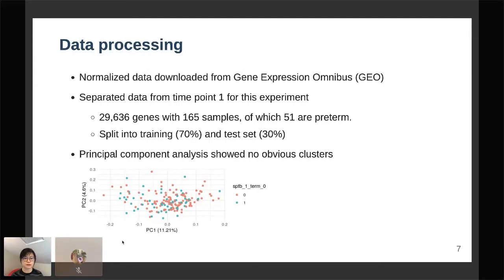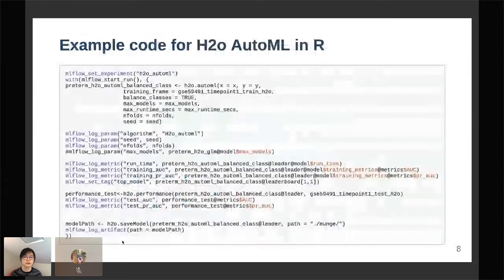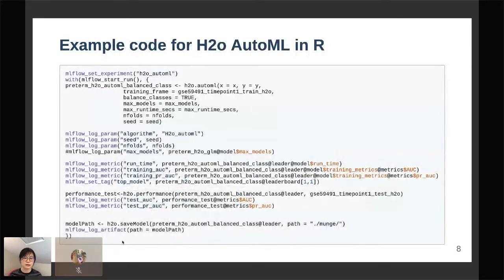This is an example code for running my little experiment using H2O AutoML in R. TPOT and also AutoGluon have Python APIs, but the setup is pretty similar. I set the experiment name with MLflow as H2O AutoML.